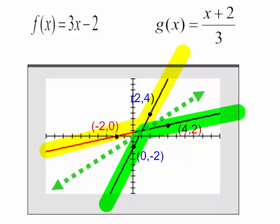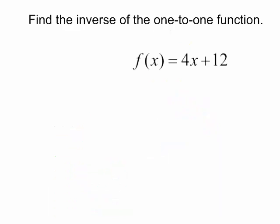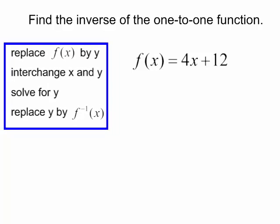Let's do one more problem involving inverses. Find the inverse of the one-to-one function f of x is equal to 4x plus 12. Here are our steps. We are going to replace f of x by y. So that will be y is equal to 4x plus 12. Because remember, f of x is just a fancy way to say y.